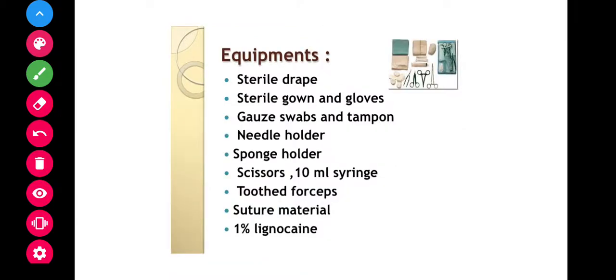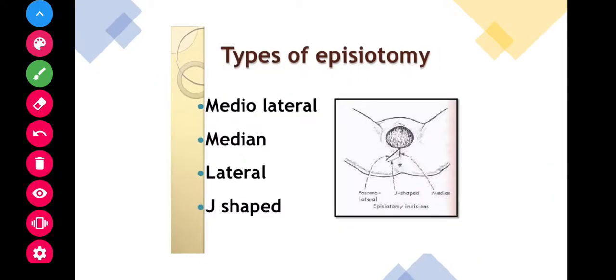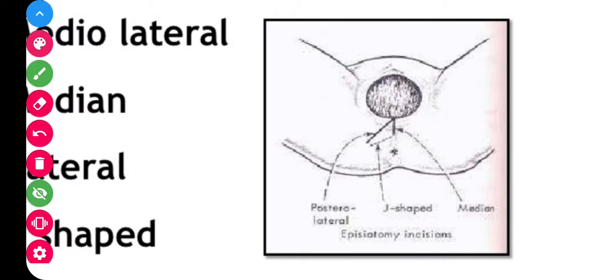What are all the equipment for this? I said J-shaped, so let us see J-shape also here. This is what the J-shape looks like. This is posterior lateral and medial lateral, and this is median, and this is J-shaped.